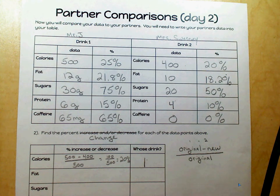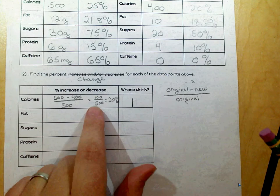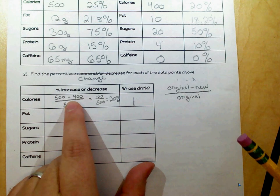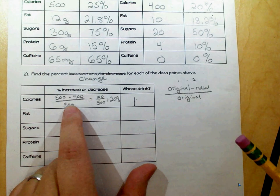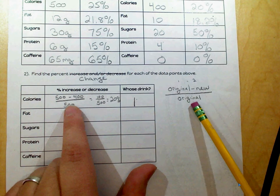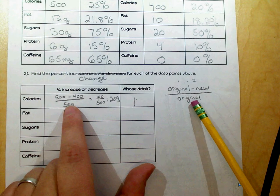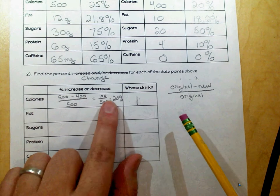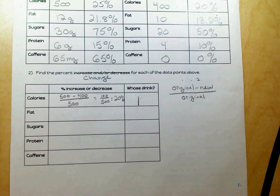Because what you're going to be doing is you're going to be finding the percent change between the larger drink in each category minus the smaller drink divided by the larger drink. So the larger drink is going to be your original minus your new over the original. You're going to be taking a look and seeing what the difference is between each drink.